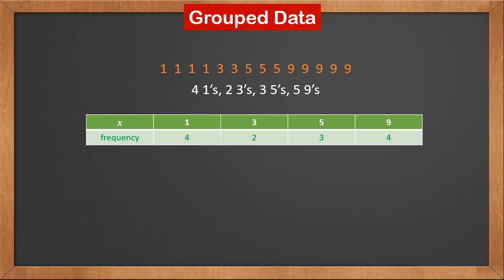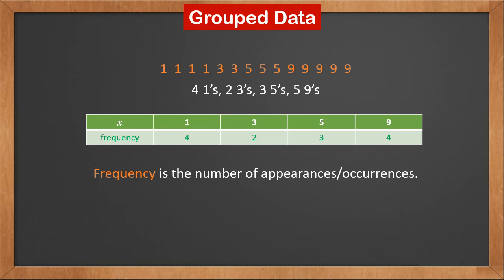The first row x is all the possible values. The second row is frequency. Frequency is the number of appearances or occurrences. Number 1 appears 4 times, so its frequency is 4. Number 3 appears twice, so its frequency is 2.